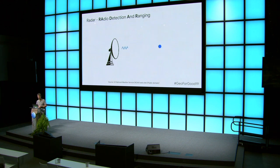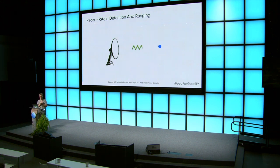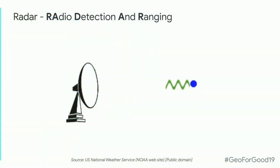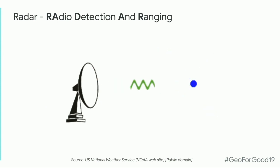Radar stands for Radio Detection And Ranging. The idea is that there is an antenna that emits some energy, it goes off and bounces off some scatterer, and some of that energy makes it back to the source — some will not, some goes off in other directions. When you have a radar pointing down at the earth, there are all kinds of things that could be reflecting energy back, which can make it confusing to understand exactly how the signal is coming back.